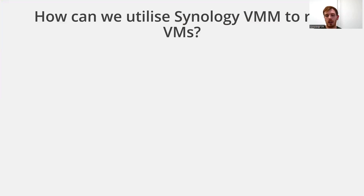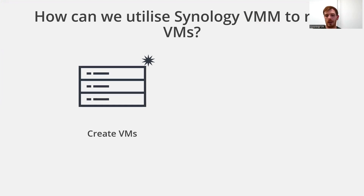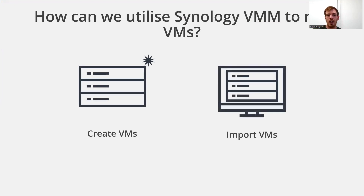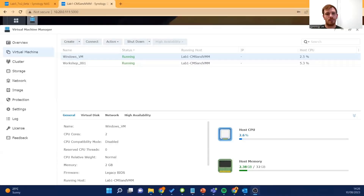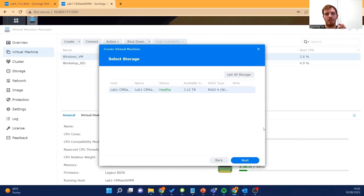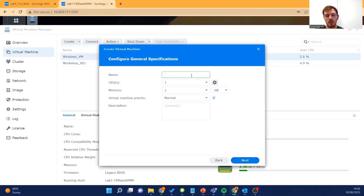So we've taken a look at how we install the package on the NAS, but how do we actually go about utilizing it? First off we'll take a look at how we can create virtual machines on the NAS, and then we'll look at how we can import VMs — so if you have a different solution, how can we migrate onto Virtual Machine Manager? Let's create a new virtual machine. Here in Virtual Machine Manager we'll select Create, and we're going to create a virtual DSM — our reasons for this will become apparent a bit later. We'll give it a name: 'virtual storage'.